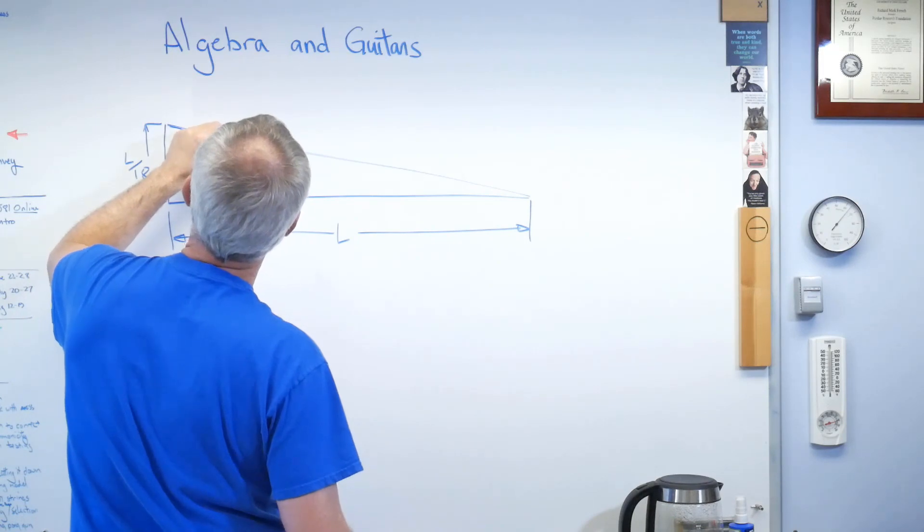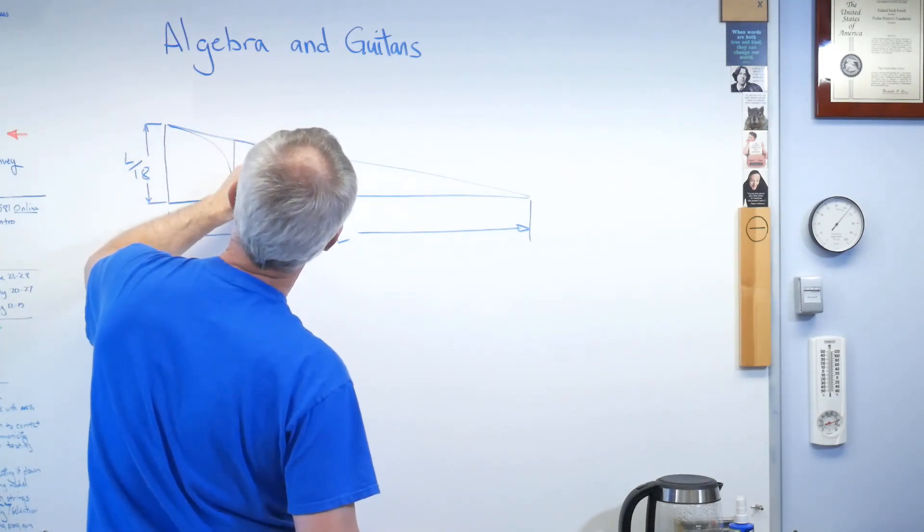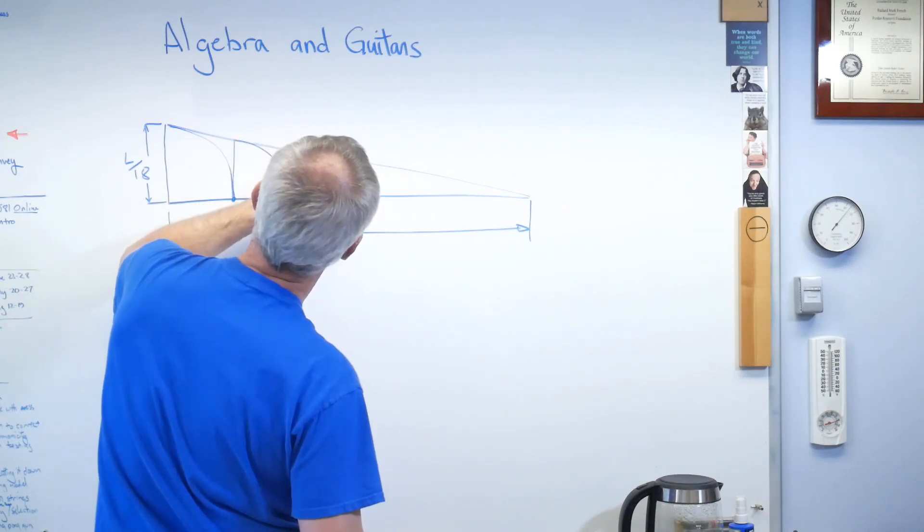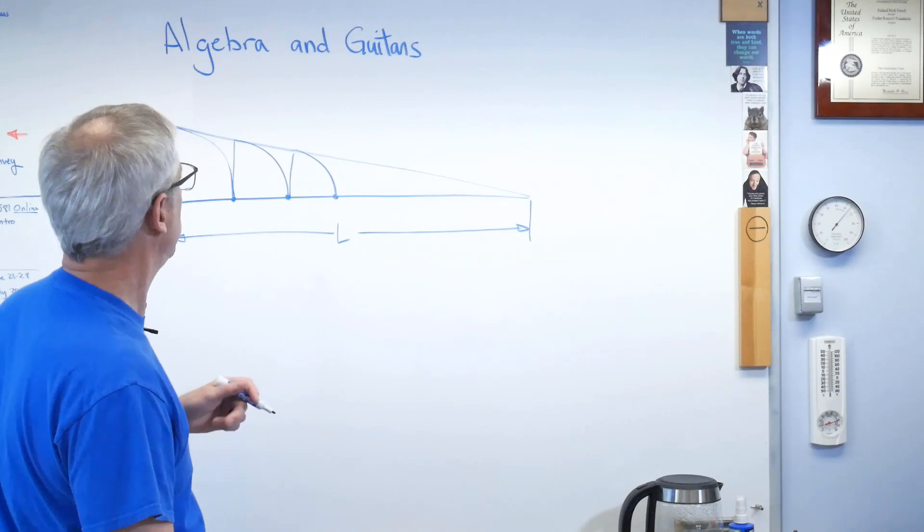So, go up to here. Swing down again. There's the location of the second fret. There's the location of the third fret. And so on. This is nice.